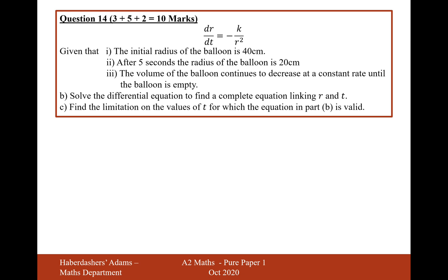Let's now move on to part B. Given that the initial radius of the balloon is 40 centimeters, and after 5 seconds, the radius of the balloon is 20 centimeters, the volume of the balloon continues to decrease at a constant rate until the balloon is empty. Solve the differential equation to find a complete equation linking r and t. Okay, so let's write it out then. dr/dt equals minus k over r squared. Now, this is an integration where you have to separate the variables, so I'm going to multiply the r squared onto the other side, and multiply the dt onto the other side. Now, what we'll do to both sides is integrate both sides. So r squared is 1 over 3 r cubed equals minus kt plus c.